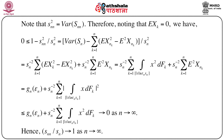The first term is G_n(ε_n) and the second term, applying the definition of X_{nk} over |x| ≥ ε_n s_n, is s_n^{-2} Σ_{k=1}^{n} |∫_{|x| ≥ ε_n s_n} x dF_k|² ≤ G_n(ε_n) + s_n^{-2} Σ_{k=1}^{n} ∫_{|x| ≥ ε_n s_n} x² dF_k, which goes to 0 as n → ∞. So s_{nn}/s_n → 1 as n → ∞.